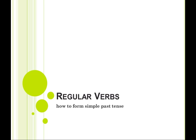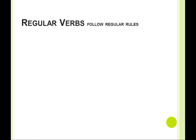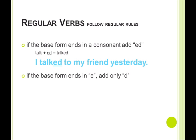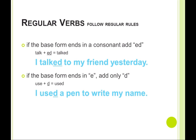Regular verbs: how to form the simple past tense. Regular verbs follow regular rules. If the base form ends in a consonant, add -ed: 'talk' plus -ed equals 'talked' — 'I talked to my friend yesterday.' If the base form ends in -e, add only -d: 'use' plus -d equals 'used' — 'I used a pen to write my name.'